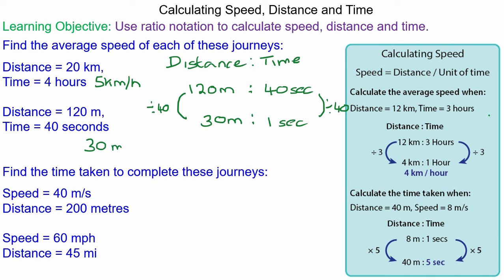30 meters per second. We can use the same idea to calculate time when the speed is given. It tells us in the question 40 meters per second. So in one second we have traveled 40 meters. How far in 200 meters?